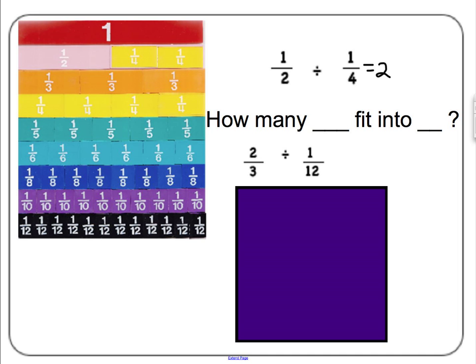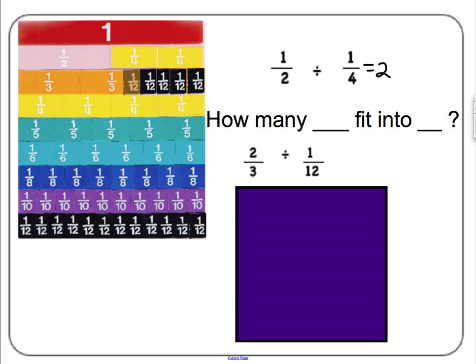Two-thirds divided by one-twelfth: how many one-twelfths fit into two-thirds? For one-third you need four one-twelfths, and then you need four more for the other third. So the answer is eight.